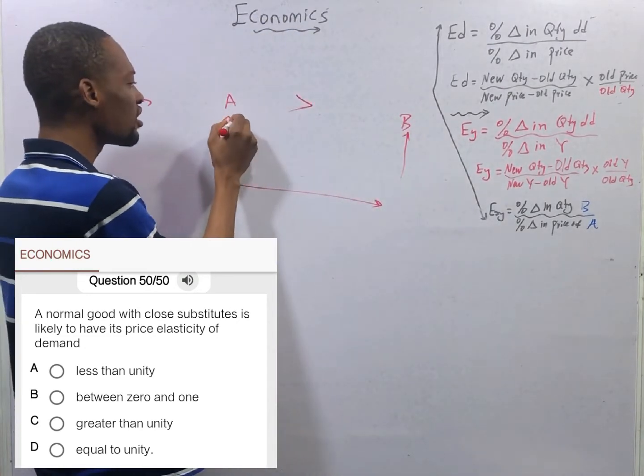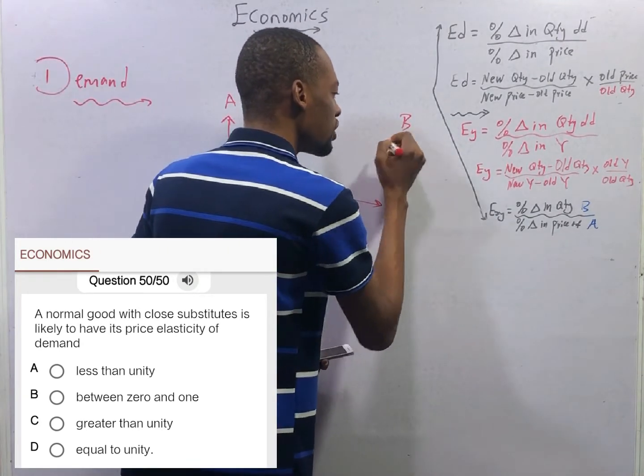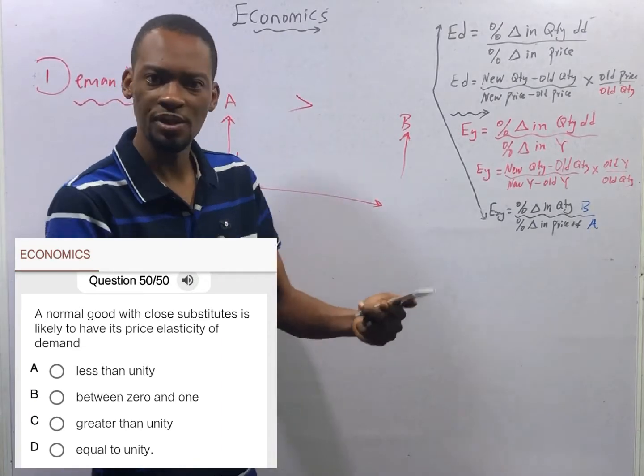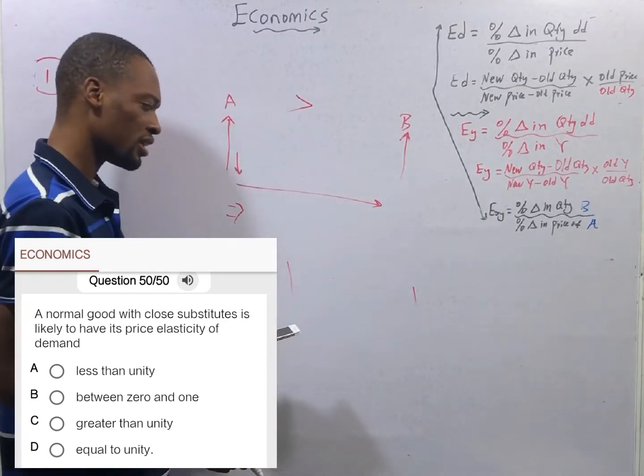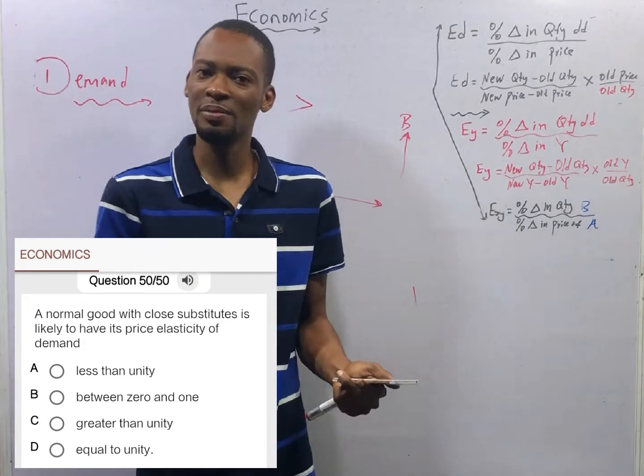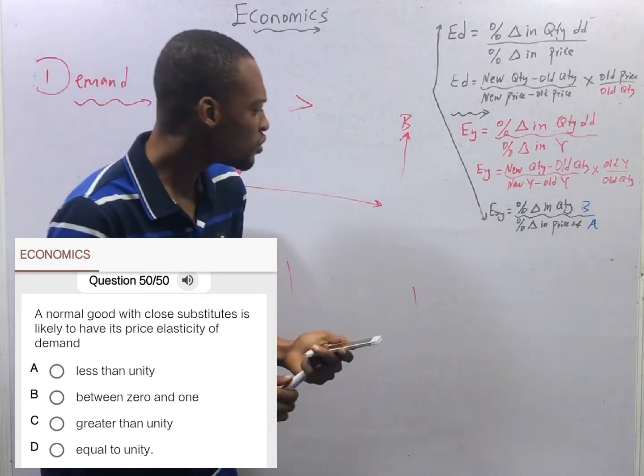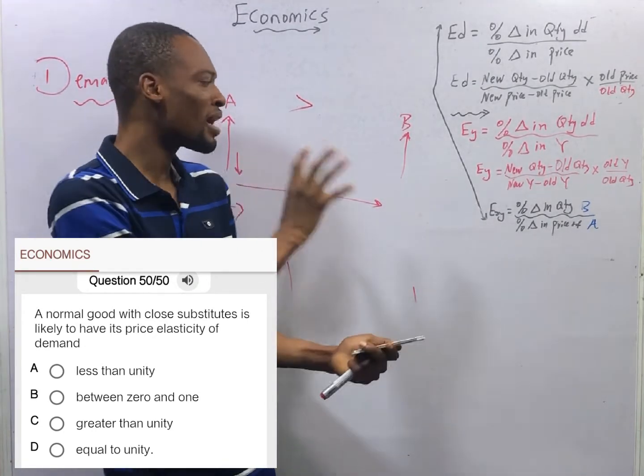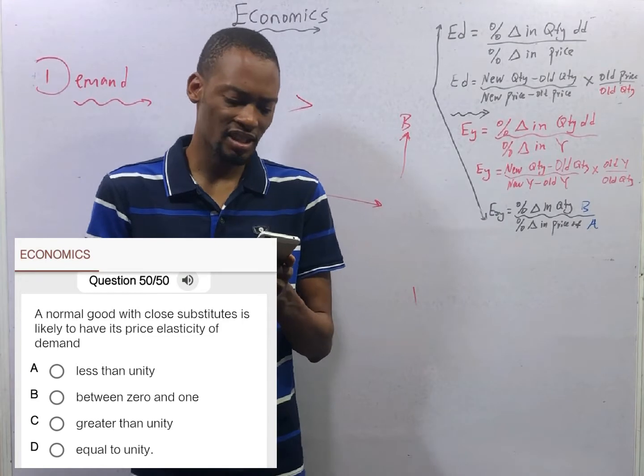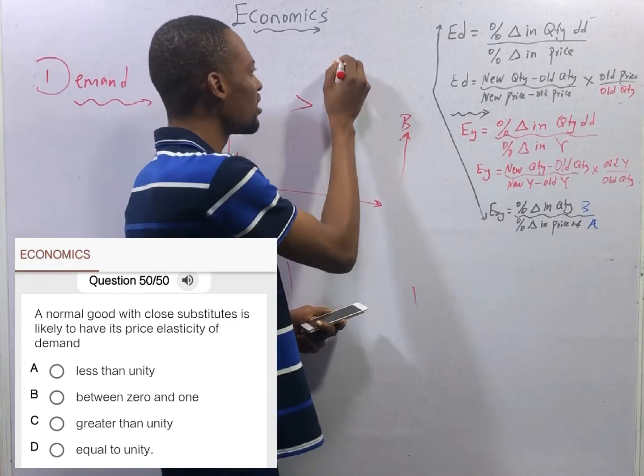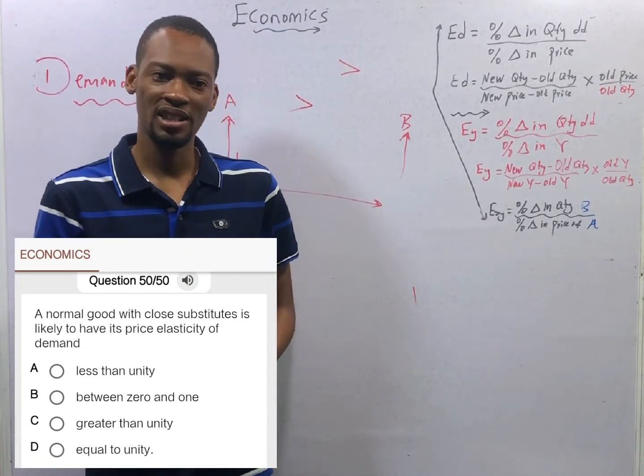If price for A increases, the demand for A will drop drastically because people will rush to the substitute to B. So, as the price of A increases, the quantity of A reduces drastically and the demand for B begins to increase. And for goods with close substitutes, a little increase in price will lead to a greater increase in quantity demanded. Which means if price increases by 5%, the quantity demanded can drop by 10%. So, for such goods, they are fairly or relatively elastic. For normal goods, they are fairly or relatively elastic. And for fairly or relatively elastic, the price elasticity of demand should be greater than one. So, this is for goods with close substitutes. That makes option C the correct option.